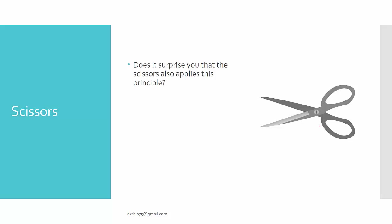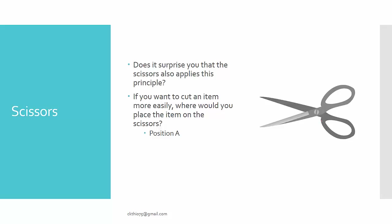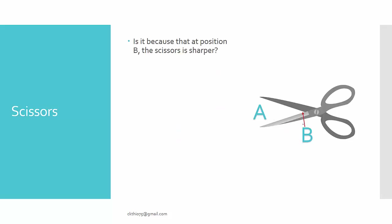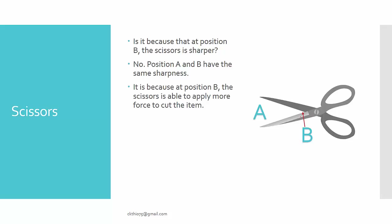Does it surprise you that scissors also apply this principle? If you want to cut an item more easily, where will you place it on the scissors — at position A, the tip, or position B, at the mouth near the pivot? It seems intuitive that we place things at the mouth of the scissors. At position B, the scissors are able to apply a larger force to cut the item compared to position A.